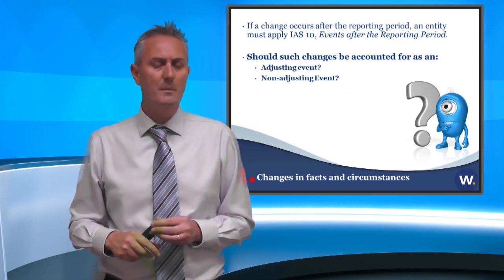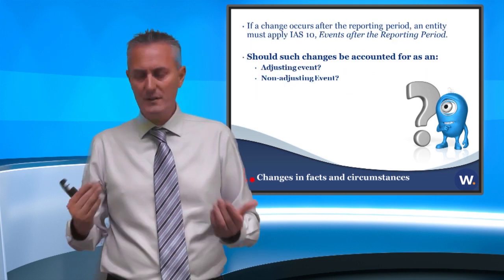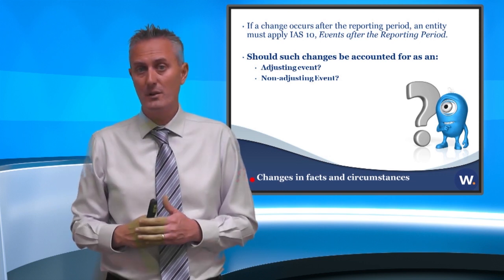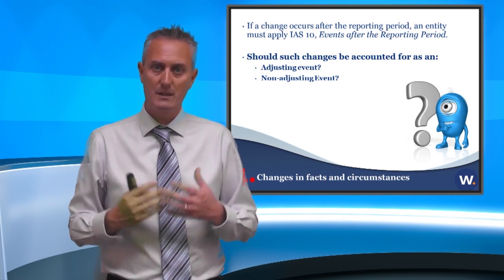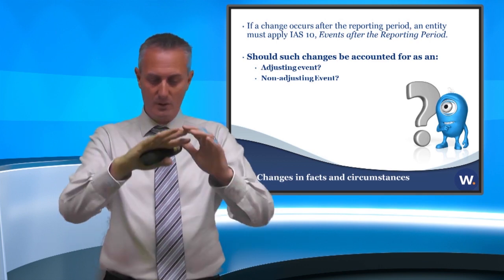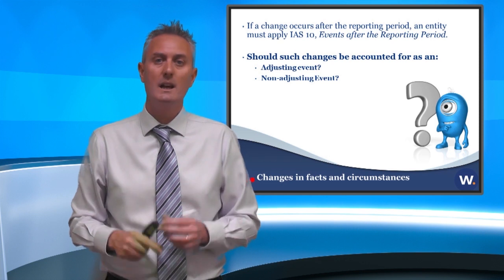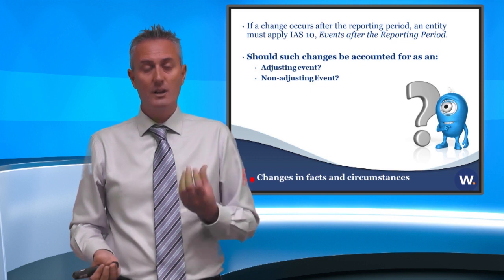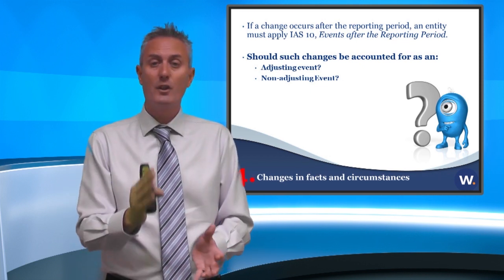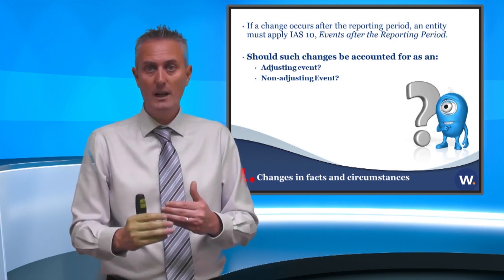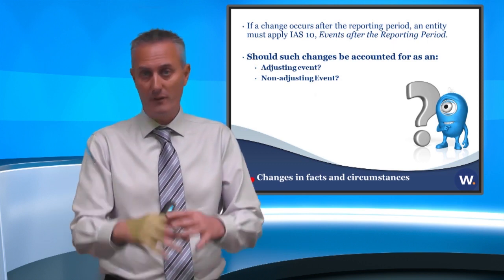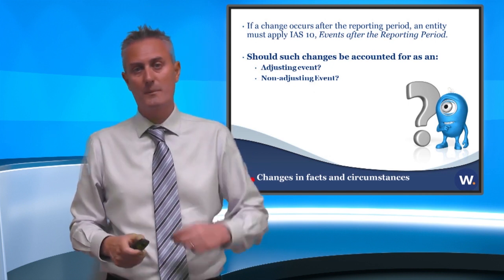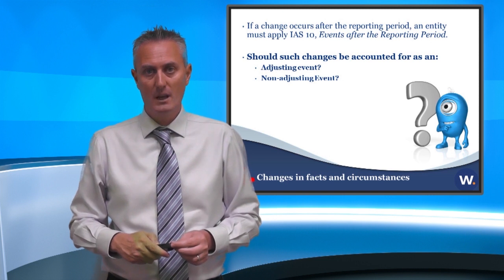What about post-balance sheet events? If something happens between the year-end and the date we sign off the accounts, would you need to worry about those? The standard points to IAS 10 and says you need to consider all the details there. IAS 10 says you look at either adjusting events or non-adjusting events. Adjusting events are those where something given to you post-year-end provides evidence of facts or circumstances that happened before year-end. Non-adjusting events are where something happened after year-end.